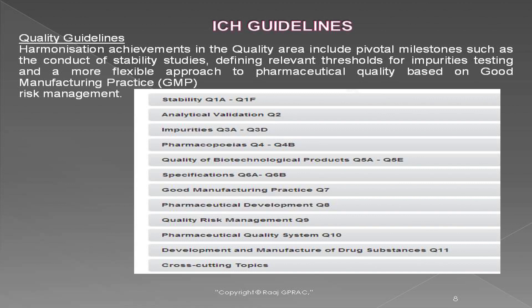There are 12 quality guidelines published to date, ICH Q1 to Q12. Q1 covers stability studies; Q2 covers analytical method development and validation; Q3 is for impurities; Q4 for pharmacopoeias; Q5 for quality of biotechnological products; Q6 for specifications; Q7 for GMP of the API; Q8 is the pharmaceutical development report; Q9 is quality risk management; Q10 is pharma quality system; Q11 covers development and manufacture of drug substance; and Q12, recently published, talks about product lifecycle management. Always read Q9 and Q10 together because of quality risk management in the pharmaceutical industry.